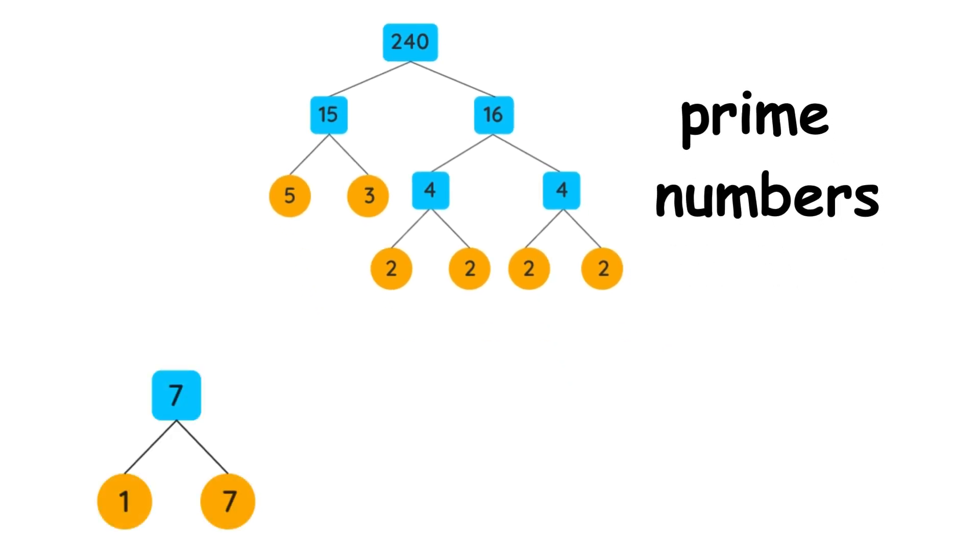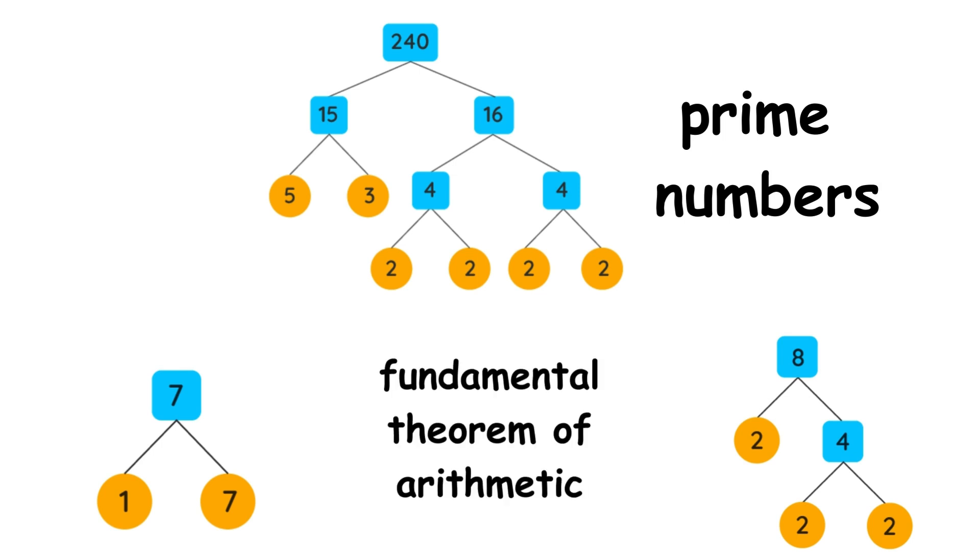Any integer greater than 1 can be expressed as a unique product of prime numbers, either as a prime number itself, or by multiplying several prime numbers together. This fact is called the fundamental theorem of arithmetic.